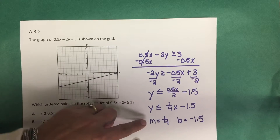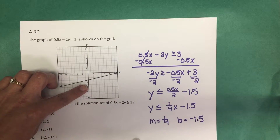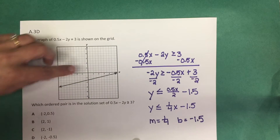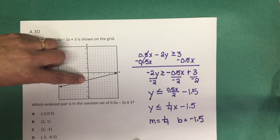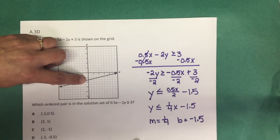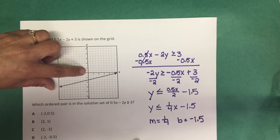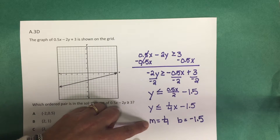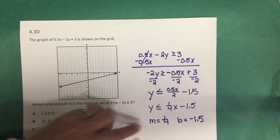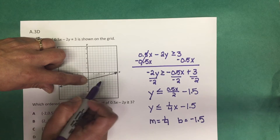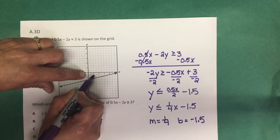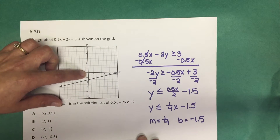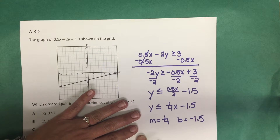Let's verify this slope and y-intercept with the graph on the coordinate plane. We can see the y-intercept is at negative 1.5 — between negative 1 and negative 2 — and notice the scale counts by one-half. To test the slope of one-fourth, we go up one unit (which is 0.5 on this scale) and over 4 units: 1, 2, 3, 4 — and we land on the line. So the line is graphed correctly and our work is verified.